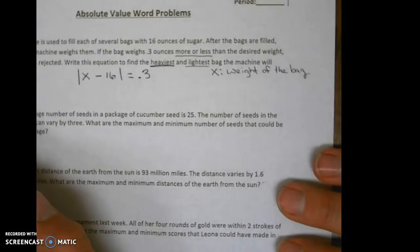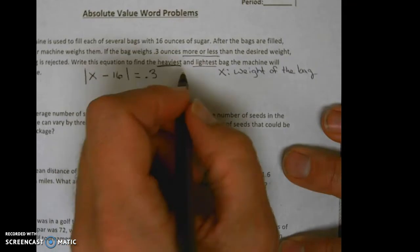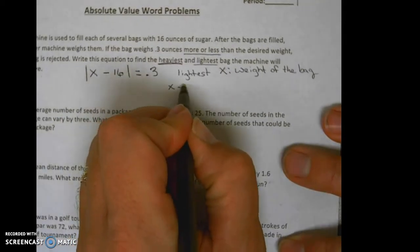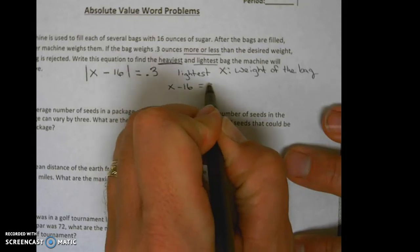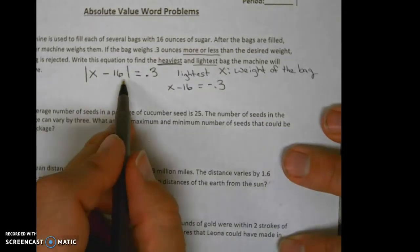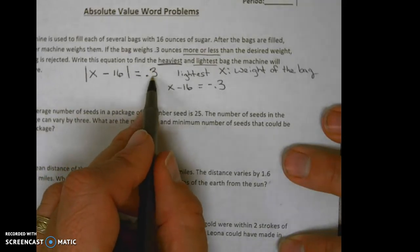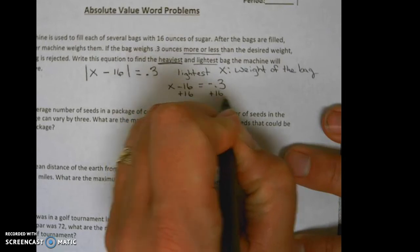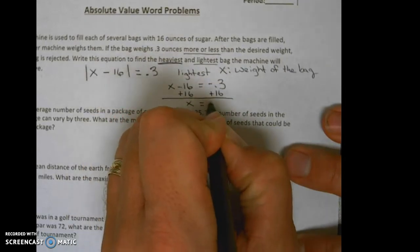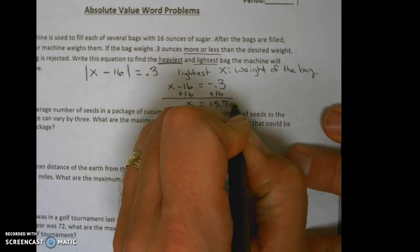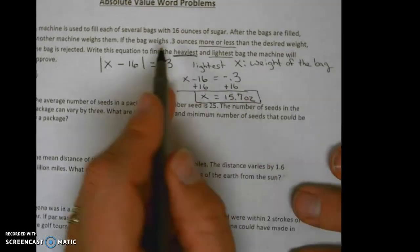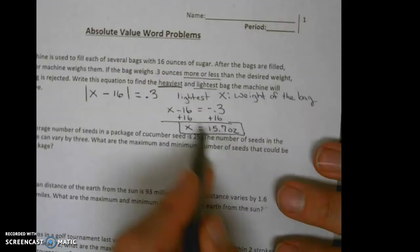Now let's look at the lightest that the bag can be. So the lightest is going to be the other equation. Remember when solving an absolute value equation, you set one equation equal to the positive and one equation equal to the negative. So solving this one for x, we'll get x is equal to 15.7 ounces. That is the lightest the bag can be. So we can be 0.3 above or we can be 0.3 below once we've added the sugar in.